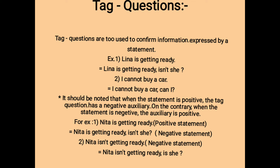A second example: 'I cannot buy a car, can I?' It should be noted that when the statement is positive, the tag question has a negative auxiliary, and when the statement is negative, the auxiliary in the tag is positive. In other words, a positive statement has a negative tag and a negative statement has a positive tag. For example, 'Neeta is getting ready' is a positive statement, and its tag form is 'Neeta is getting ready, isn't she?' — which uses a negative tag.